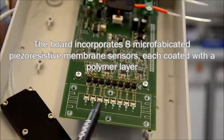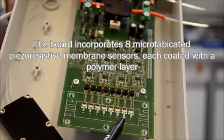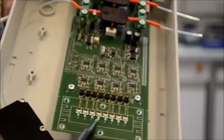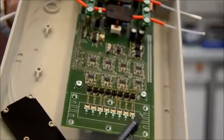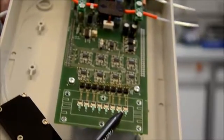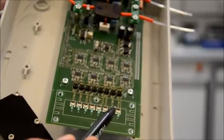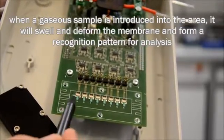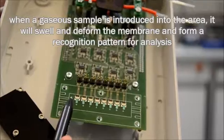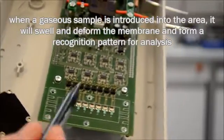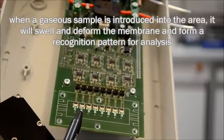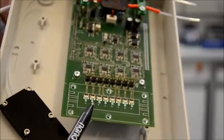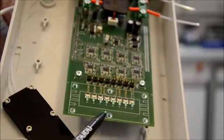Each one is modified with a polymer layer. And the gaseous sample will then diffuse into this polymer layer. It will swell and deform the membrane. That is our signal. And it is individual for each of these membranes. And from this recognition pattern, we can analyze the gaseous sample.